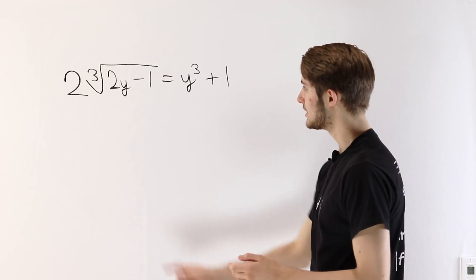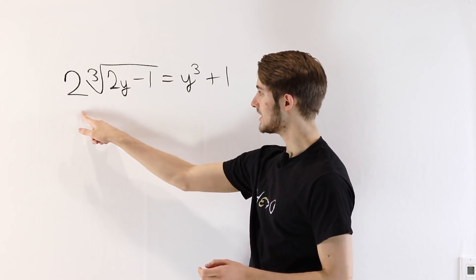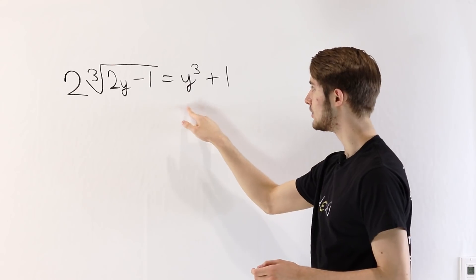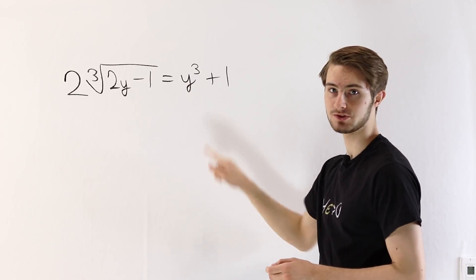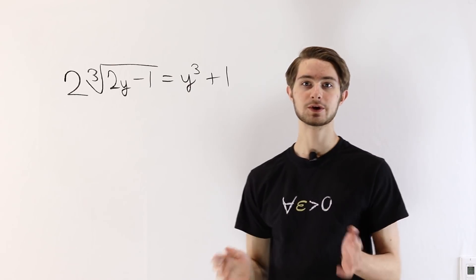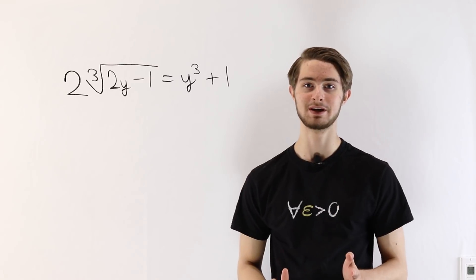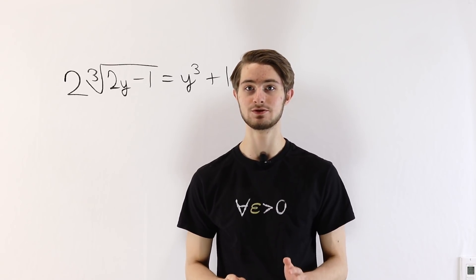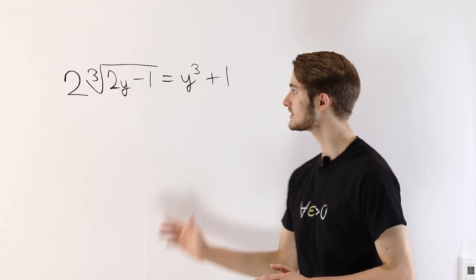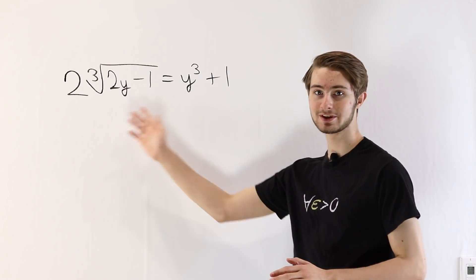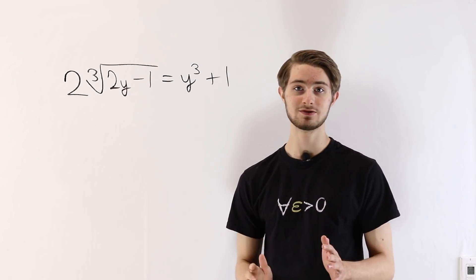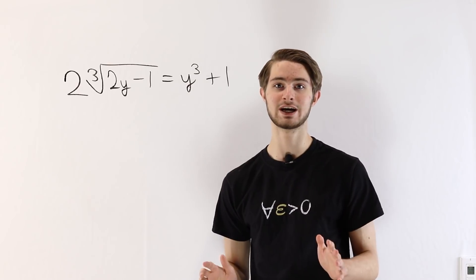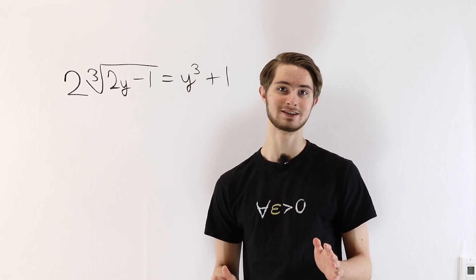We are going to solve the equation 2 times the cube root of 2y minus 1 equals y cubed plus 1, and we're going to do it with the help of Blackpen Redpen. Blackpen Redpen is an awesome math YouTube channel who does a ton of problems like these, so if you enjoy this video, I've left a link to his channel in the description.